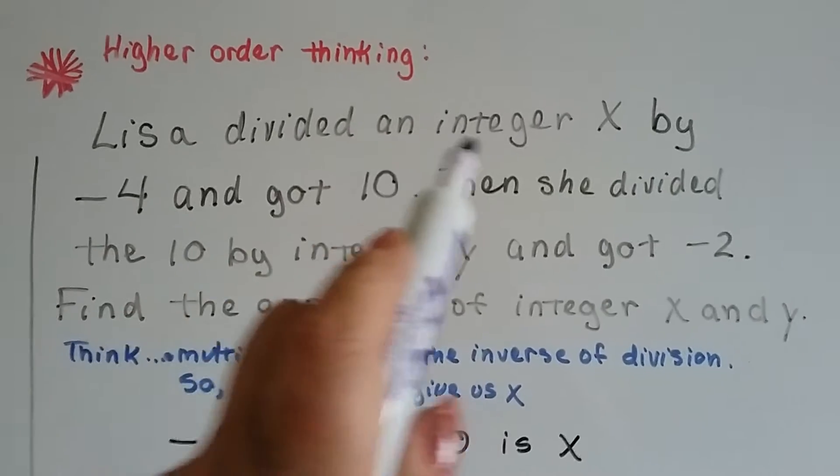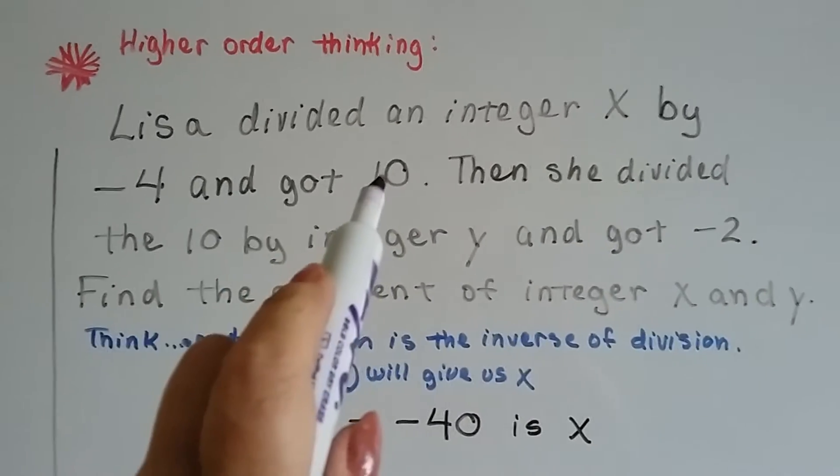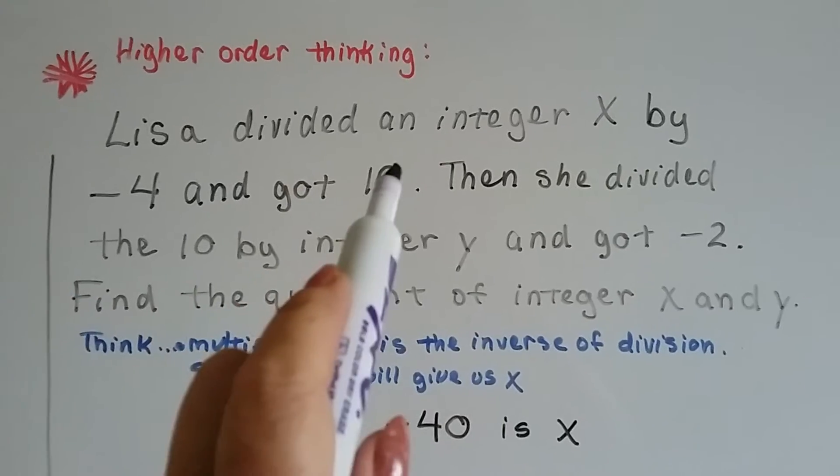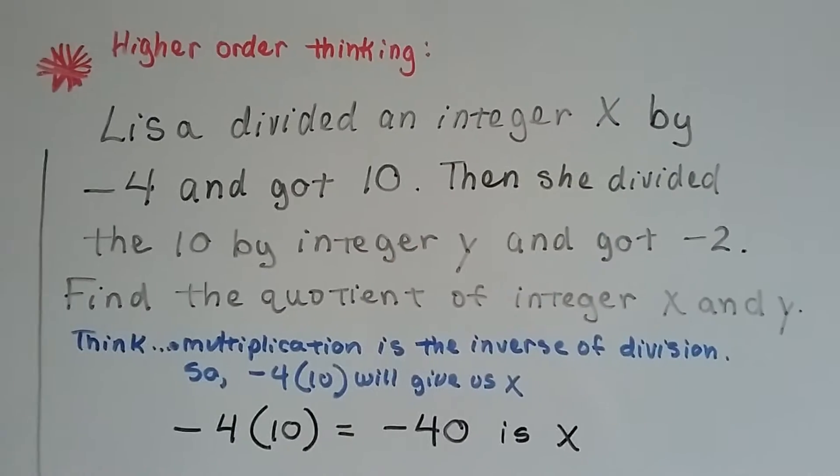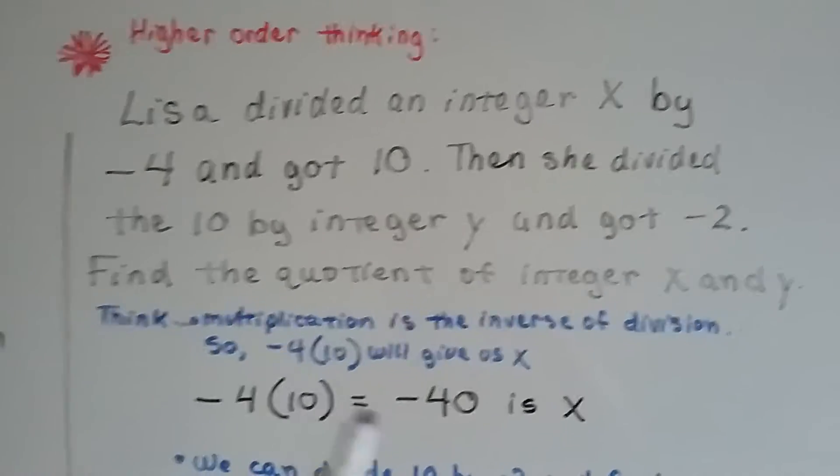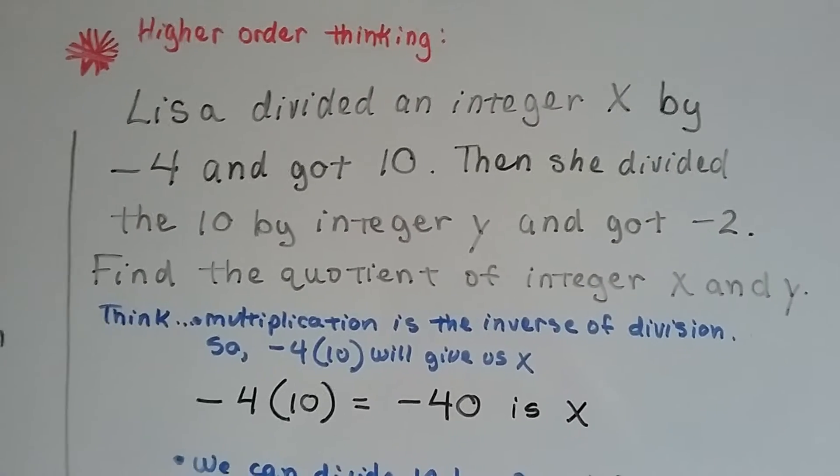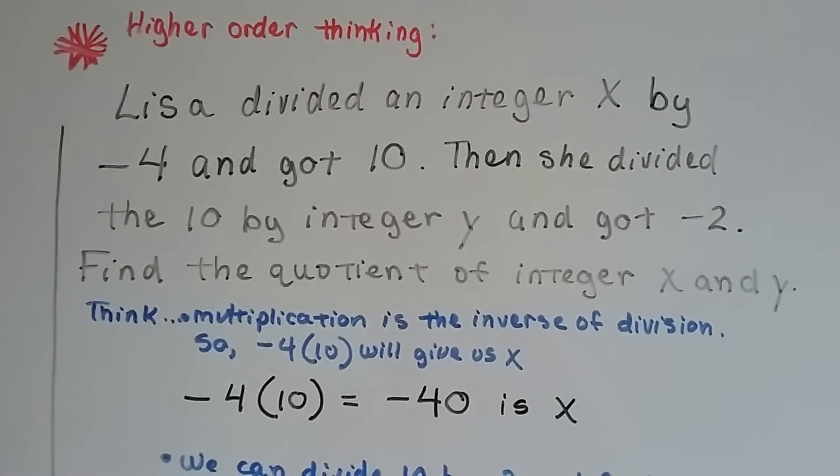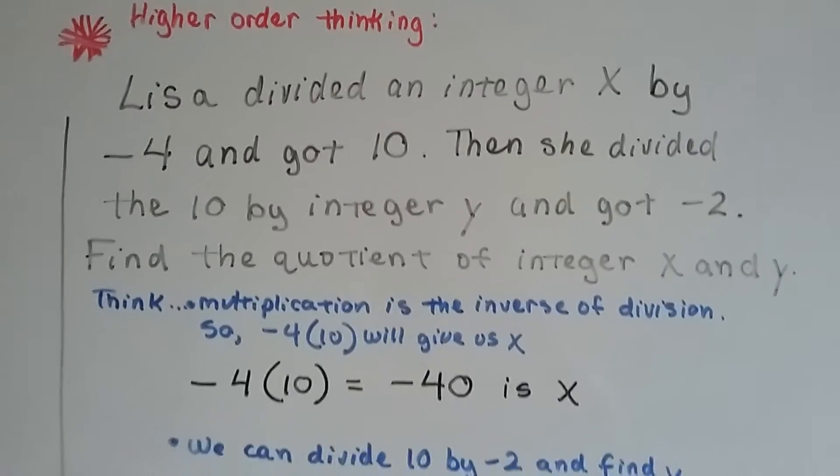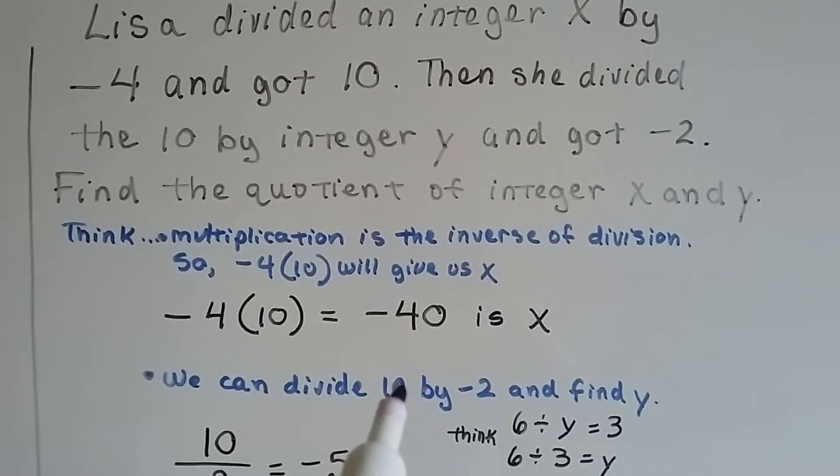So if she divided x by negative 4 and got 10, we can multiply negative 4 and 10 to get x because it's the inverse. Negative 4 times 10 is negative 40. Now we know that x is negative 40.